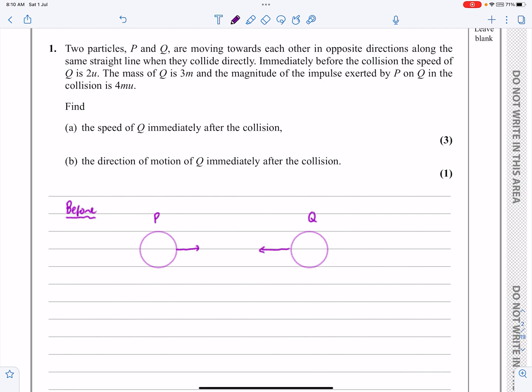So they've told me that immediately before the collision speed of Q is 2U. The mass of Q is 3M. And the magnitude of the impulse is going to be 4MU.